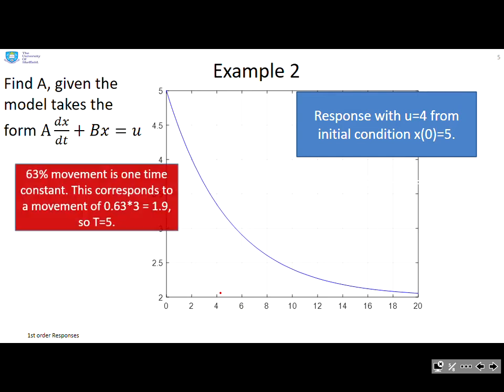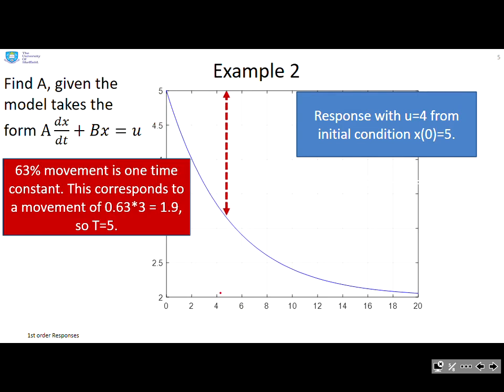First thing to do: 63 percent of the movement corresponds to one time constant. So you can work out the time constant. If you follow this line down, the time constant corresponds to t equals 5. Even though this model isn't in time constant form, I begin by looking at time constant information because that's what I know.